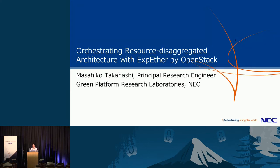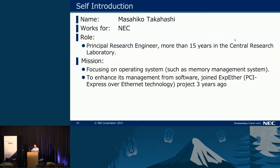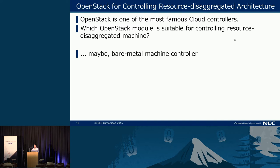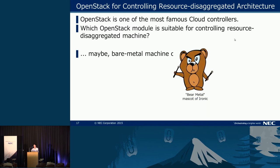My name is Masahiko Takahashi. I'm going to talk about the actual implementation for OpenStack control of Express Ether. Express Ether can realize resource disaggregation — compute nodes and devices such as remote PCI Express devices. We think resource disaggregation architecture in the cloud achieves high availability and cost efficiency. This is not only an NIC, but also Intel RackScale architecture and Cmicro server have the same architecture concept. To control resource disaggregation architecture by OpenStack, the suitable module is the bare-metal machine controller — which is Ironic.